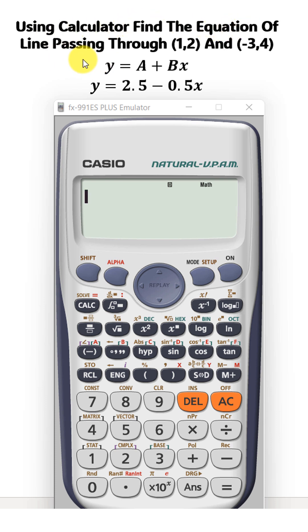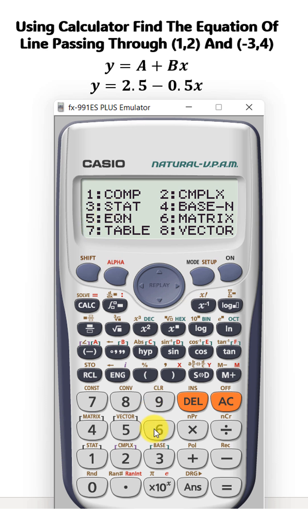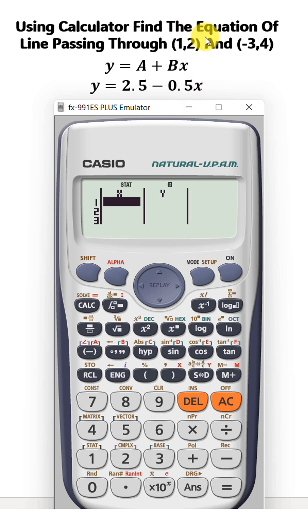Using a calculator, find the equation of the line passing through these two points. Press mode, then 3 for statistics. This is the linear model, the straight line, so press 2. Then we will enter these points.